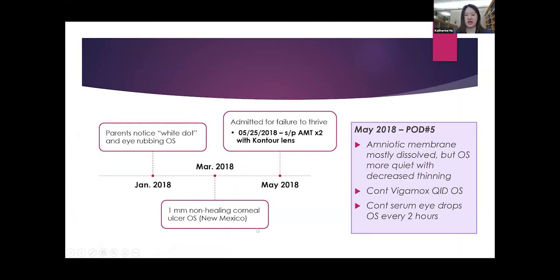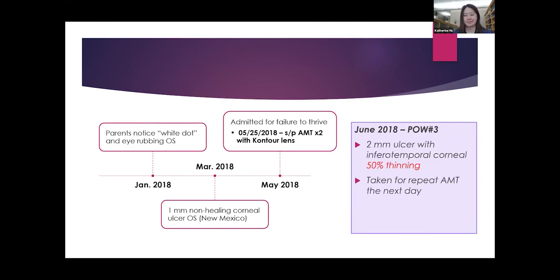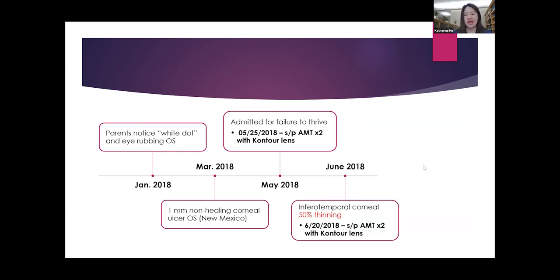Since it is so big, it stays in a little bit better. It tucks in and prevents irritation from those 8-0 vicryl sutures. It also concentrates the AMT to the cornea for full effect in promotion of healing. This is a timeline of this very stubborn non-healing corneal ulcer all the way from first presentation in January to the provider in New Mexico, and all the way to five or six months when he underwent surgical intervention with us. On post-op day five when he saw Dr. Jardine in clinic for follow-up, the amniotic membrane had mostly dissolved, but the left eye definitely appeared dramatically more quiet. There was decreased thinning of that two millimeter corneal ulcer. He was instructed to continue Vigamox and the autologous serum tears every two hours. Unfortunately when he came back two weeks later, the two millimeter ulcer had again increased thinning to about 50% and he was taken the next day for a repeat AMT.